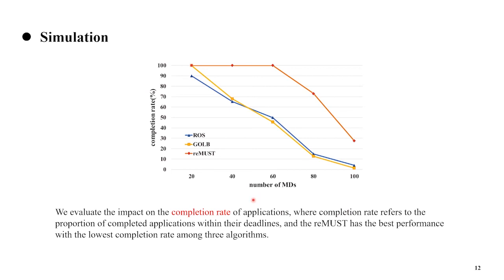Finally, we evaluate the impact on the completion rate of applications. Completion rate refers to the proportion of applications completed within their deadlines. The picture illustrates that all algorithms perform worse as the number of mobile devices increases. Among them, only REMUST achieves a nearly 100% completion rate when the number of mobile devices is 60.